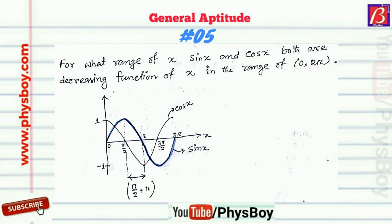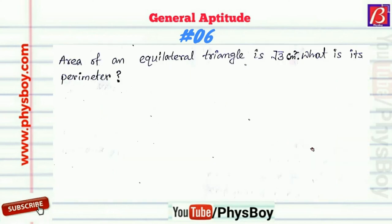In the range π/2 to π, the value of sine X is decreasing from 1 to 0, and in this range cos X is also decreasing from 0 to minus 1. So both functions are decreasing in this range of X. The correct answer is π/2 to π.